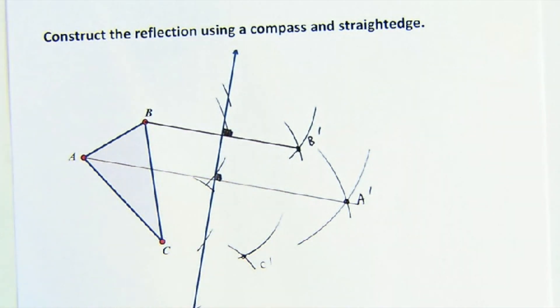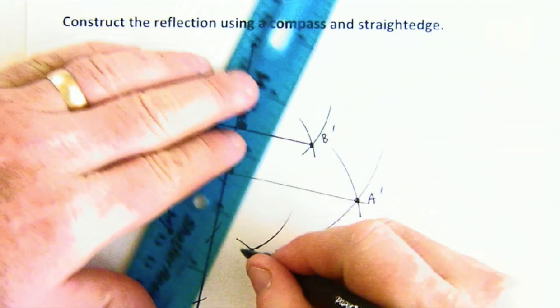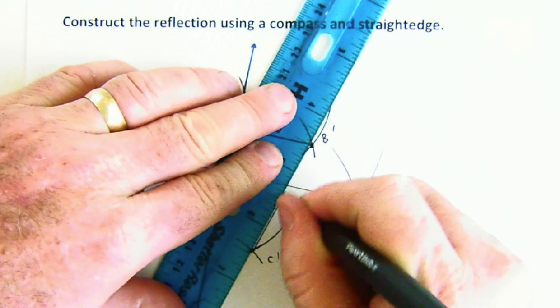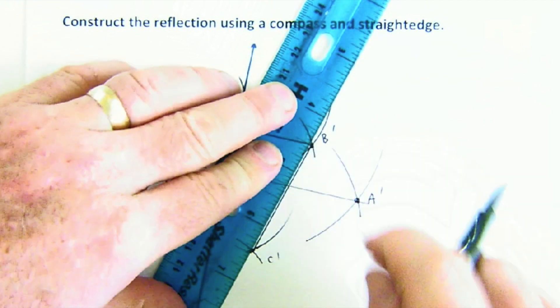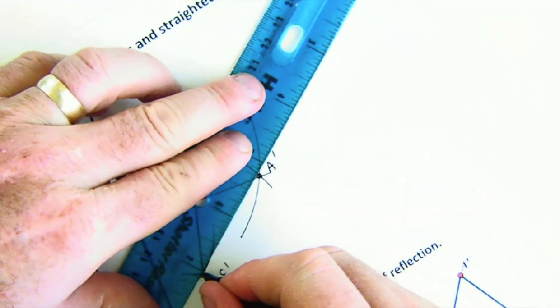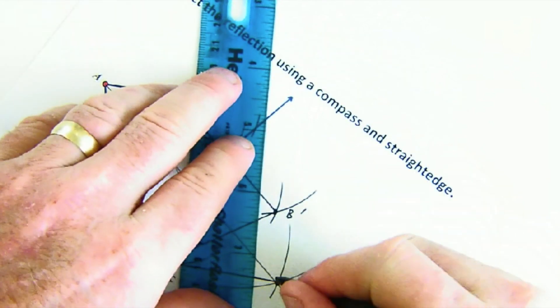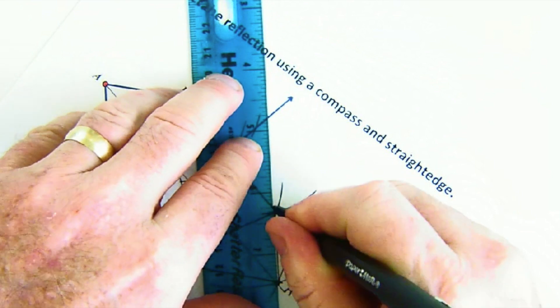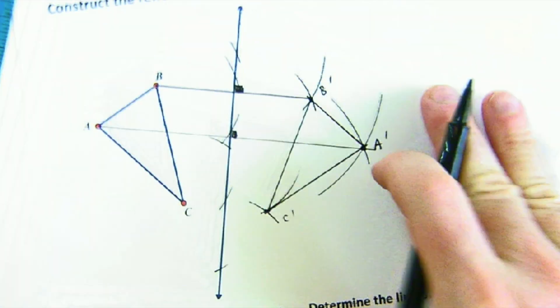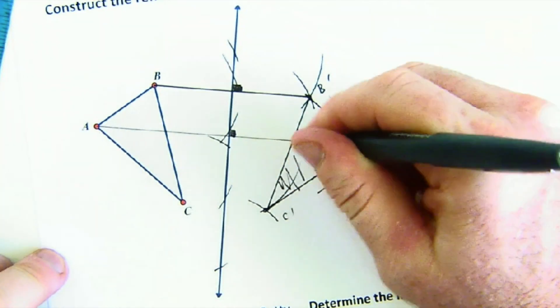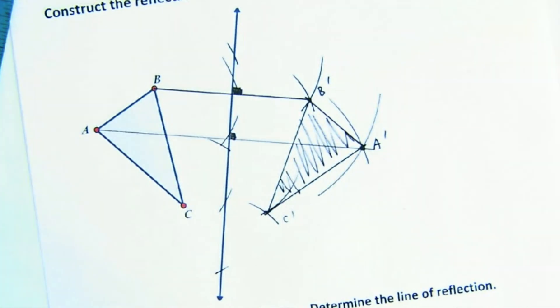So, we pull out our ruler now, or our straight edge, maybe better called. And we fill in the segments that make up this triangle. And when we're all said and done,